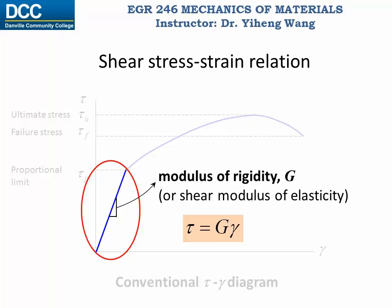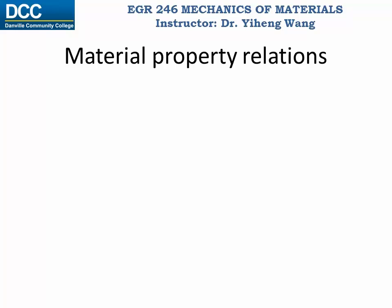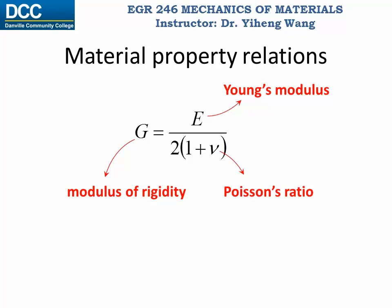The slope of the linear region is known as the modulus of rigidity G, or shear modulus of elasticity. Within the proportional limit, shear stress and shear strain are related by tau equals G times gamma. Compare this to Hooke's law, sigma equals E times epsilon — they have the same form. The modulus of rigidity G has the same unit as stress, and G, E, and Poisson's ratio nu are related by G equals E divided by 2 times (1 plus nu).